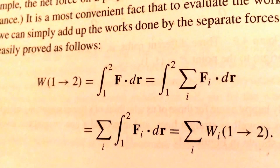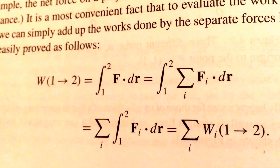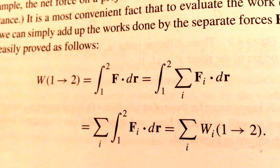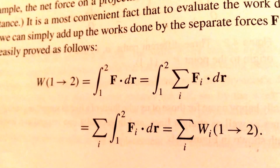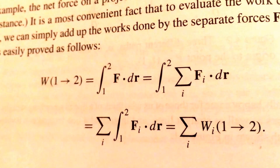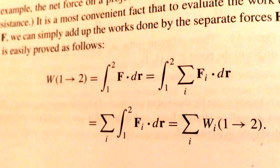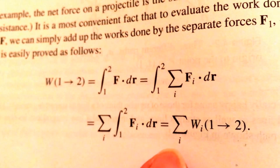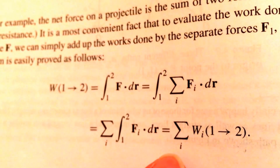For example, if you have one force pointing in one direction with a certain magnitude and another force pointing in the opposite direction of the same magnitude, when you add those two forces together the net force is zero. Together, those forces when summed do no work on the particle, and in that case the kinetic energy of the particle would not change. We can also think about the work done by each individual force, and so we end up with a summation over all the works done by each individual force.